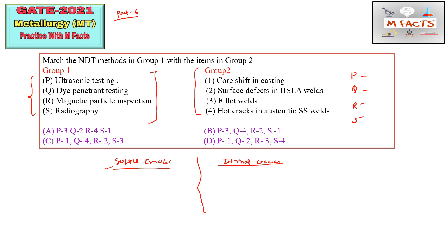We have two techniques for surface cracks: dye penetrant and MPI, that is magnetic particle inspection. The rest are for internal cracks. The limitation of MPI is that it is basically for magnetic materials only.